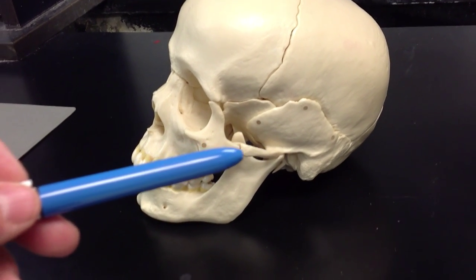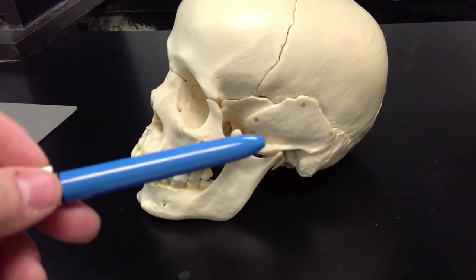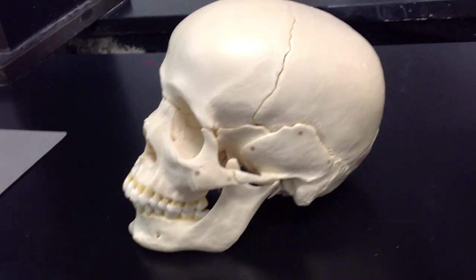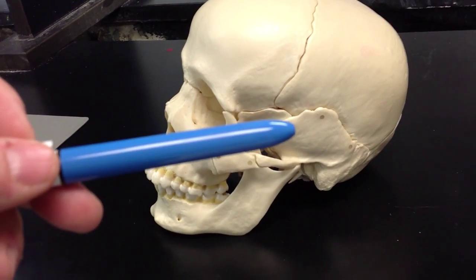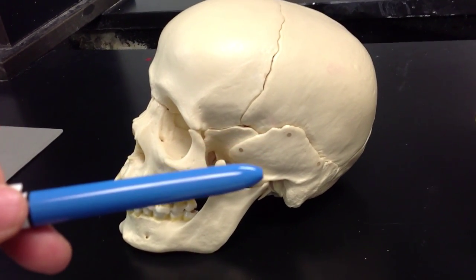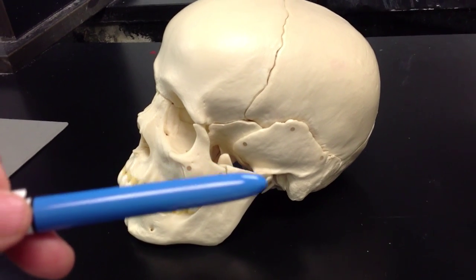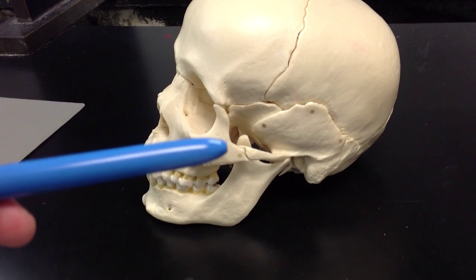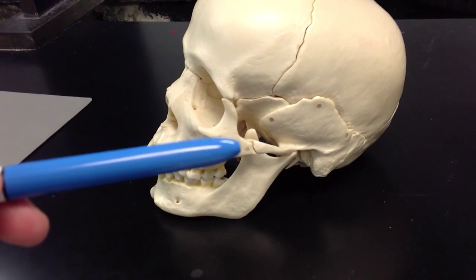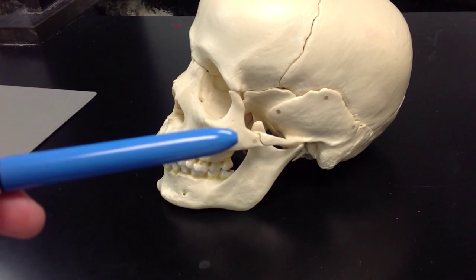Now, moving across, we have a process. Processes are named for the location they're going to, the bone they're going to, not the bone they're associated with. So here we have the temporal bone, and right across here, we have the zygomatic process of the temporal bone. Right here, we have the zygomatic bone. This little section right there is the temporal process of the zygomatic bone.